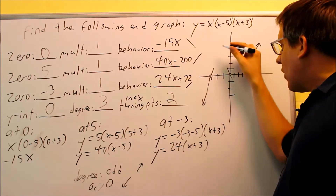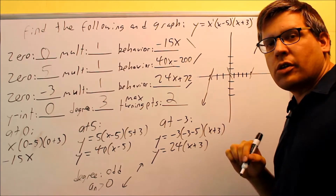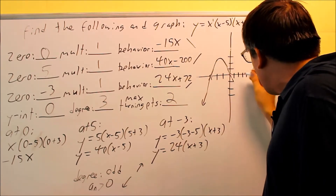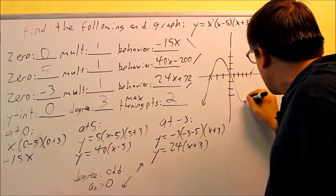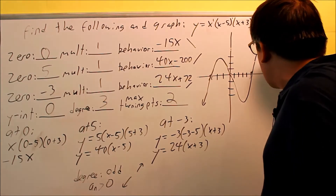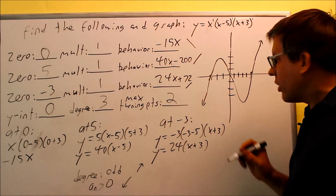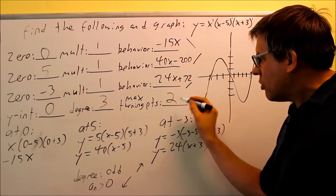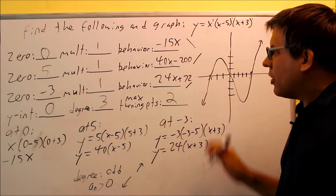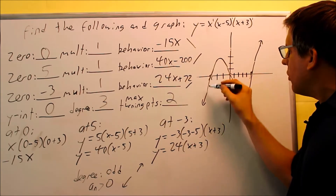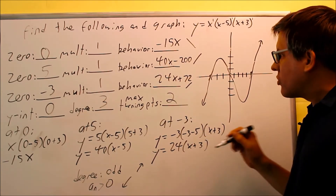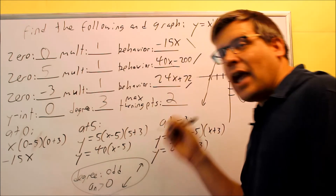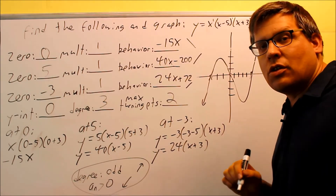So we can connect everything together and draw our graph. You won't be able to determine exactly how high or low it goes from a sketch alone — you'd have to plug in points for that. The general sketch shows the graph going down and up with two turning points, which is the maximum for degree three. Behaviors at each zero and end behavior together tell you a lot about what the graph looks like.